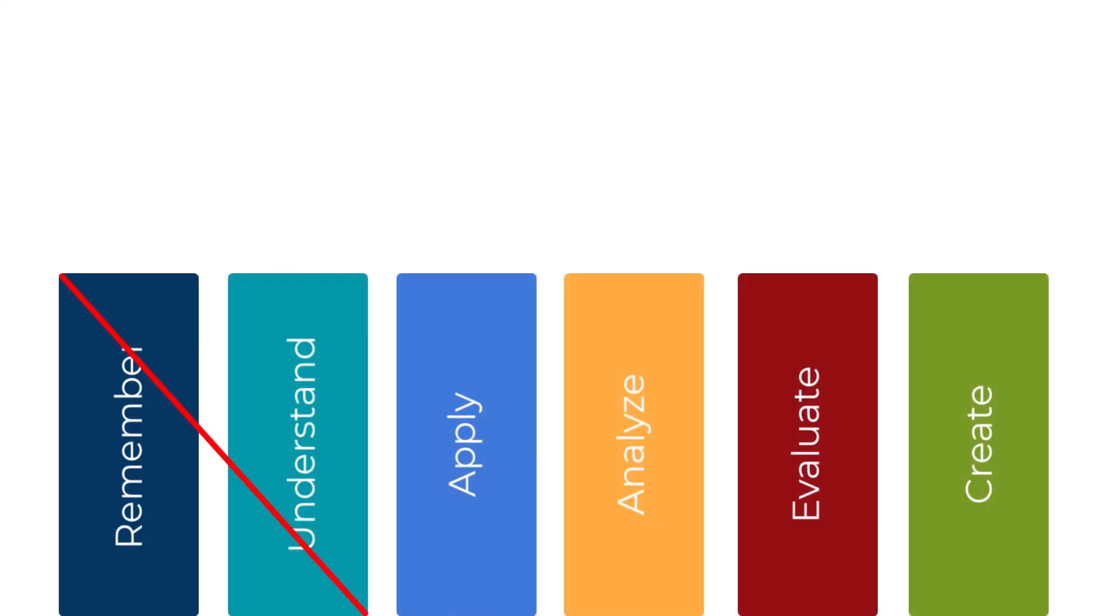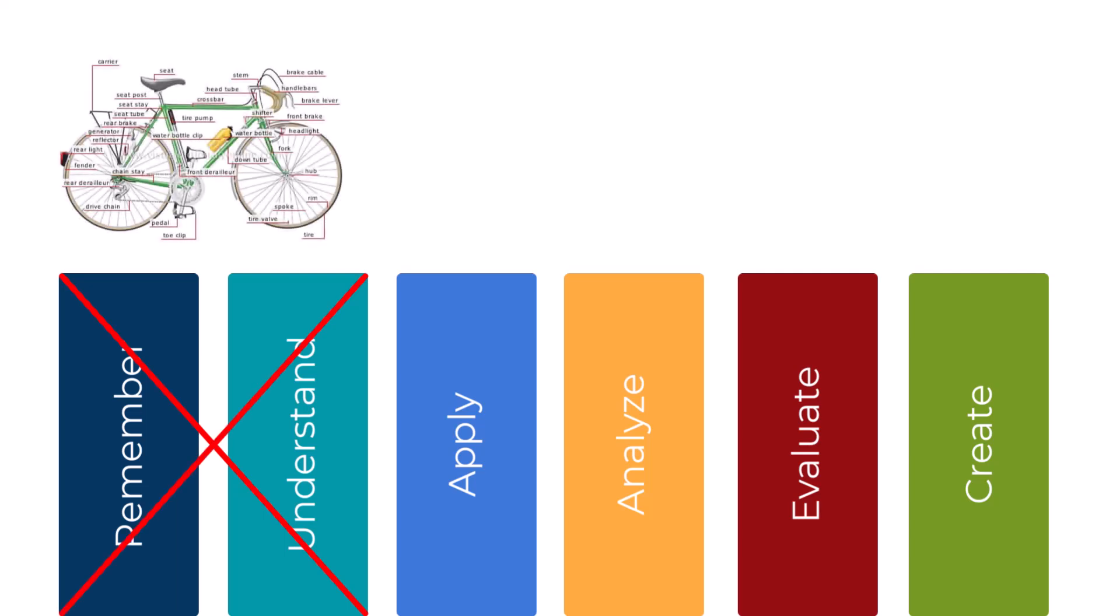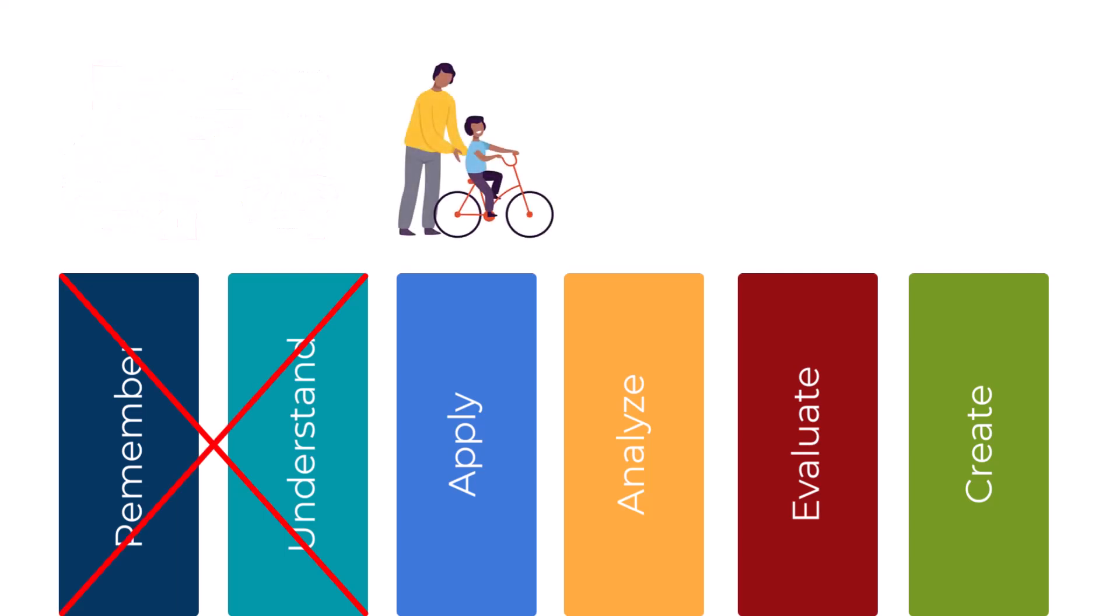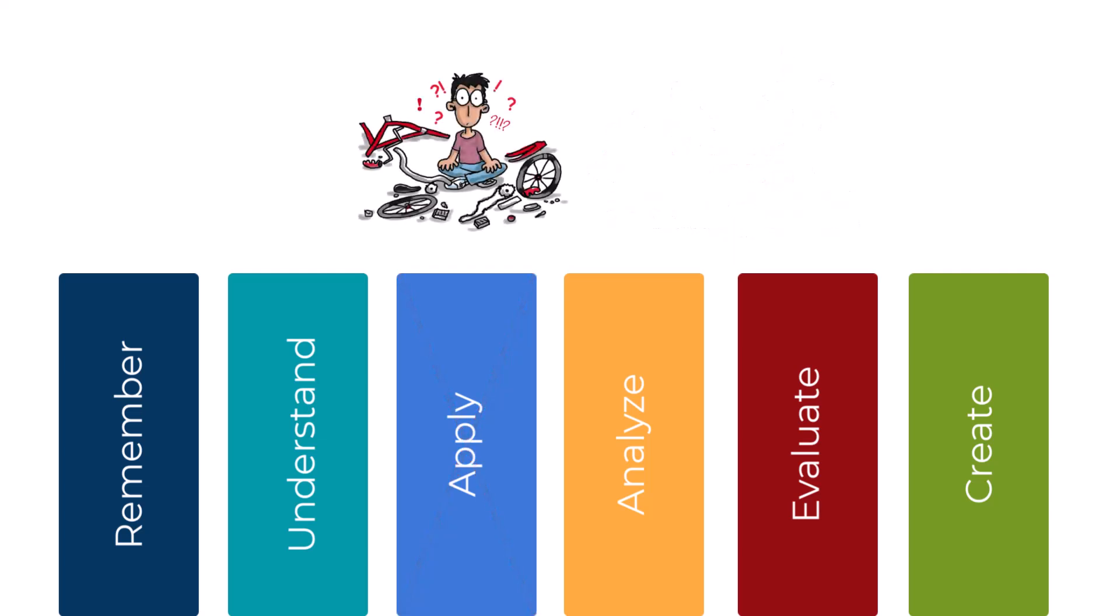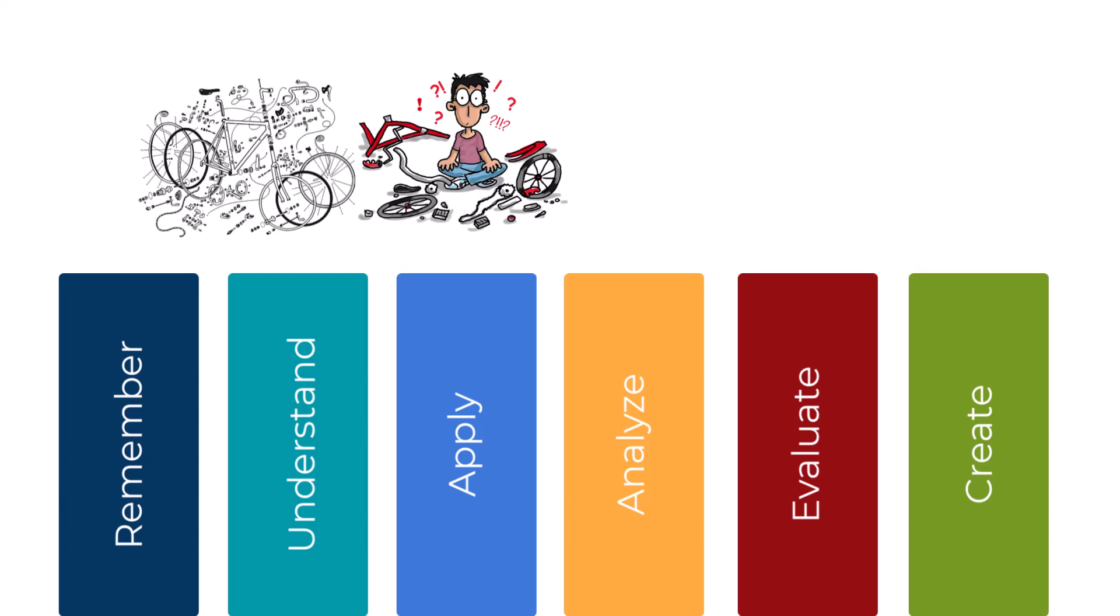For example, you aren't required to name and explain all the parts of a bicycle before you learn how to ride one, and you don't need to know how to ride a bike to evaluate the quality of one. However, if you are going to fix a bicycle, you might need to know what the parts do and why before taking the steps to fix it. It all depends on the task or behavior indicated in the objective.